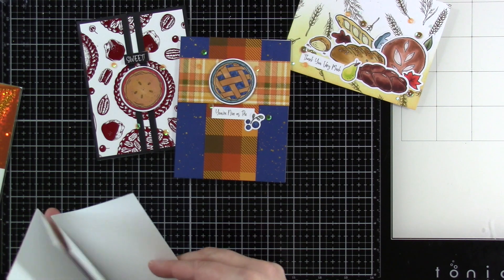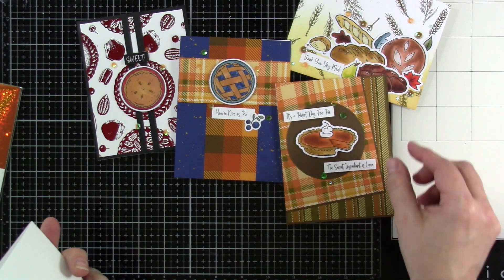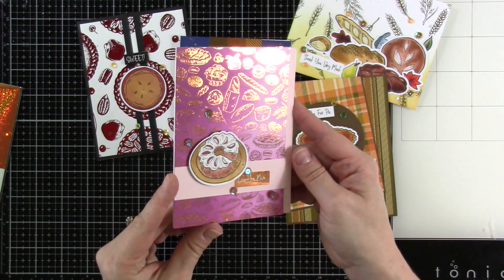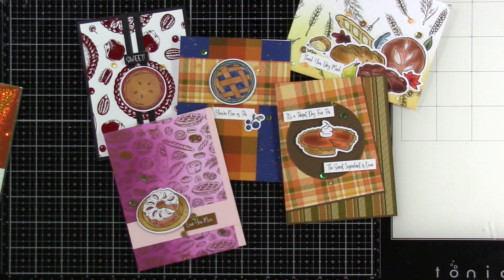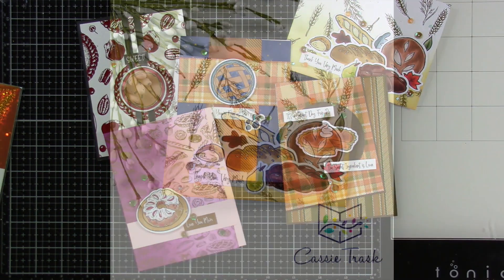This one uses another pie and it uses some splattering and the patterned paper, another one with patterned paper, and this last one with some foiling. I'm so happy with all of them. And I hope you like them too.